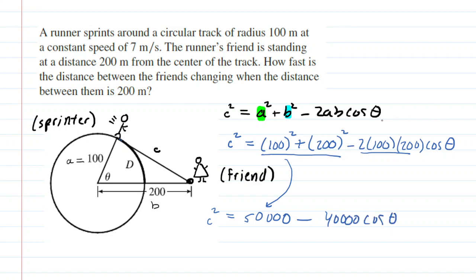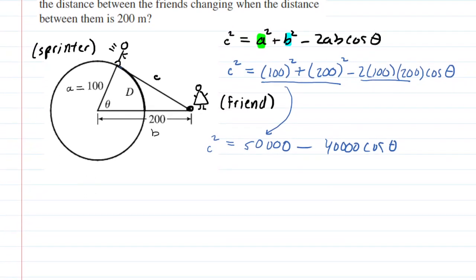Now once you have your simplified equation, we have to differentiate this with respect to time. We're doing it with respect to time because this is a related rates problem. These distances are changing as a function of time.